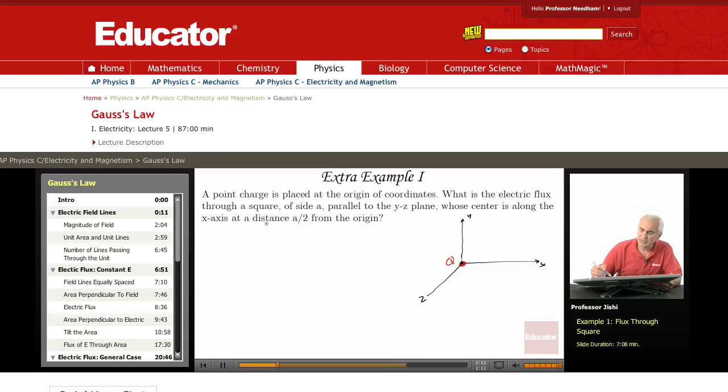So the center is along the X axis, and it's at a distance A over 2. So we have a square like this, the center of the square is here along the X axis and at a distance A over 2.